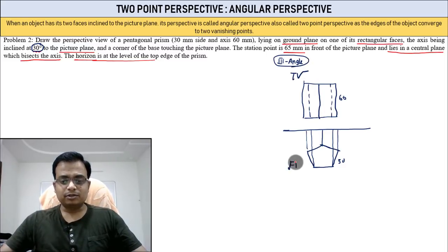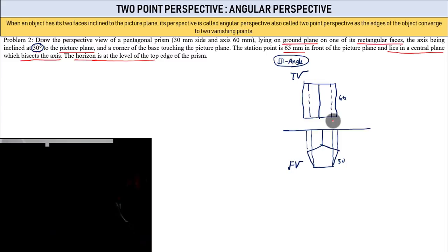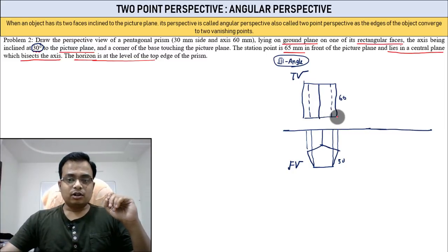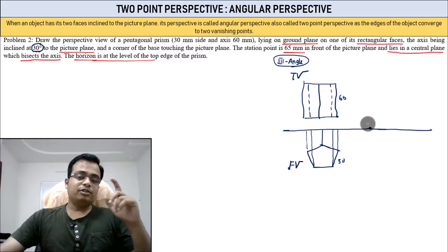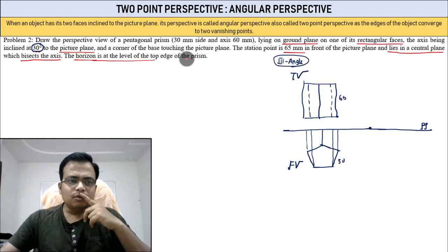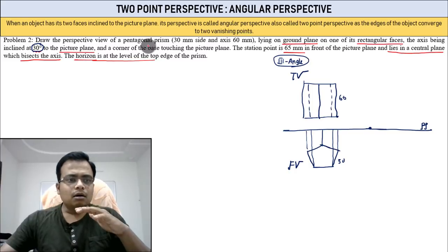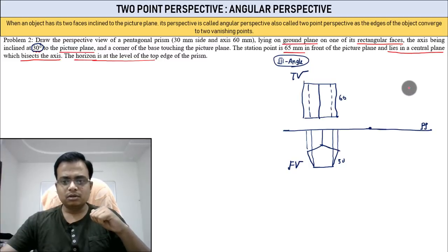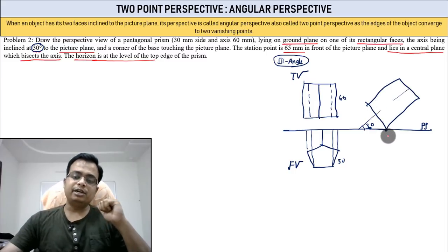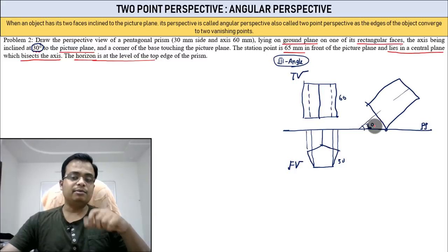One corner is in contact with the picture plane — treat this vertical plane as the picture plane. The axis is inclined at 30 degrees to the picture plane. You make a point, and this angle is 30 degrees. If the axis makes a 30-degree angle, all edges parallel to the axis also make 30 degrees.